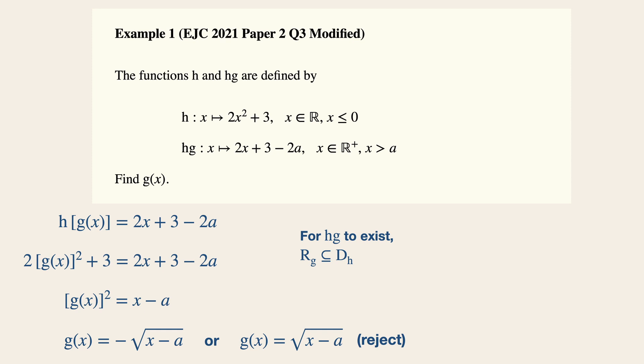So for this function here, the domain of h is from negative infinity to zero inclusive, and the range of g must be a subset within this domain of h. So simply put, the function of gx is negative square root x minus a.